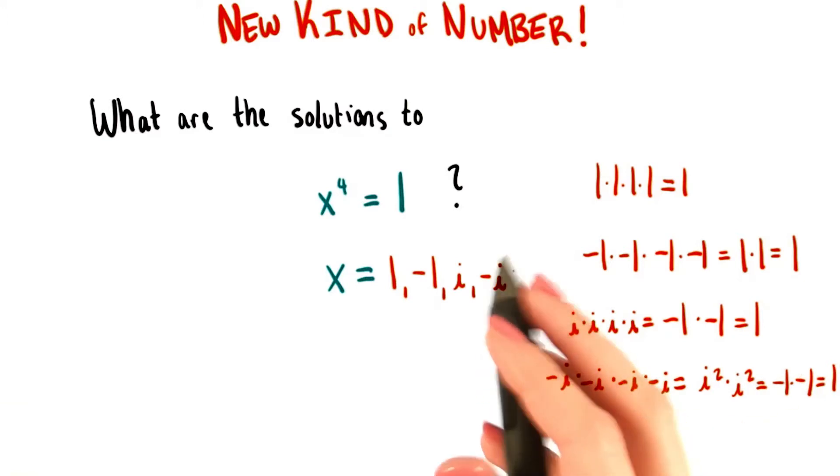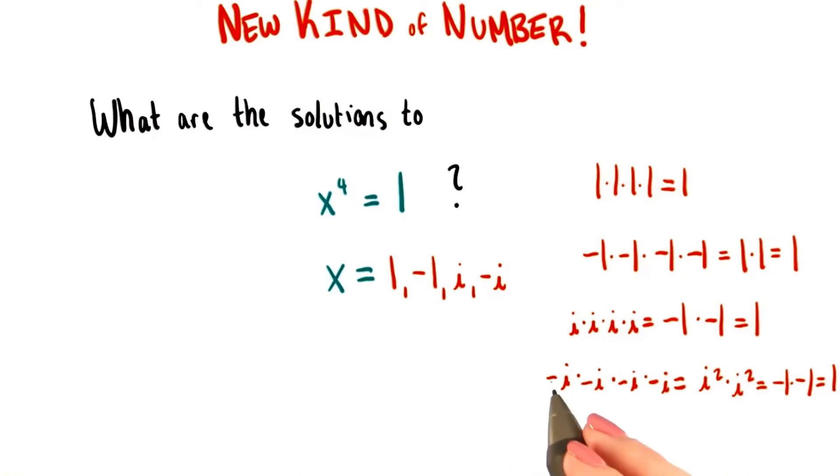I think probably taking negative i to the fourth power is the least intuitive of these. But we know that when we multiply two negatives together, the negative signs cancel one another out.